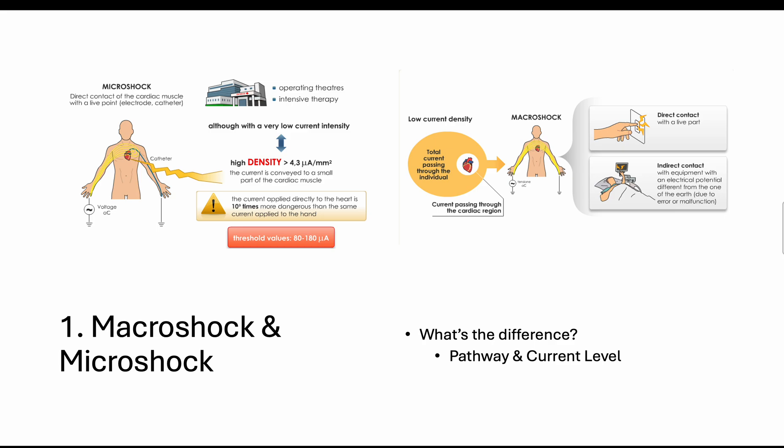This normally happens in operating theaters and intensive therapy during surgical procedures where the patient is exposed to either an electrode or catheter. The value normally ranges - there's normally a range, but it's in the units of microamps. So it's very small compared to macroshock which is in milliamps. In microshock, the range is normally 80 to 180 microamps when applied directly or in very close proximity to the heart, as you can see from that diagram. This is very dangerous because it can disrupt the normal cardiac function of the heart.